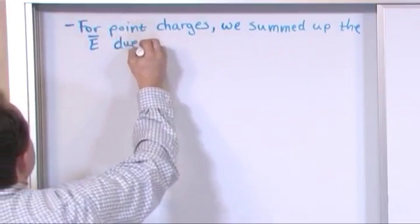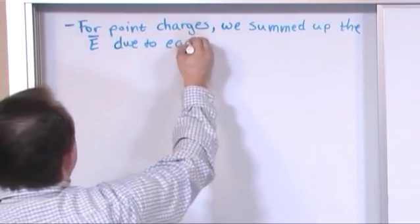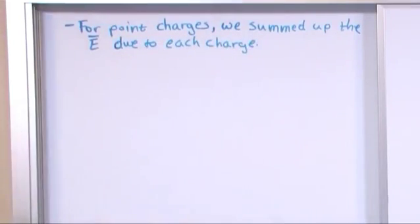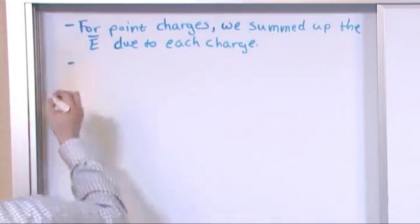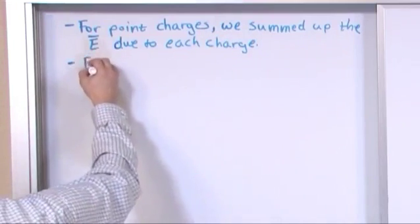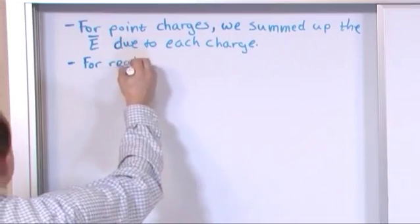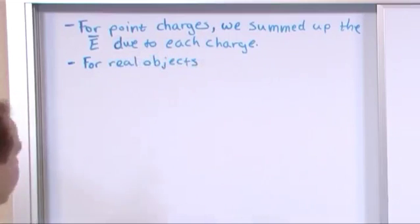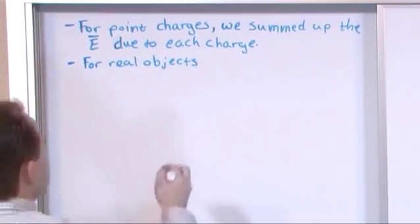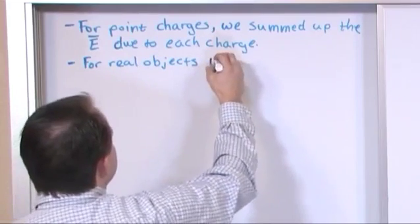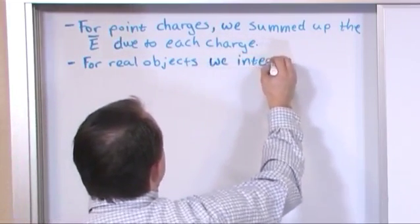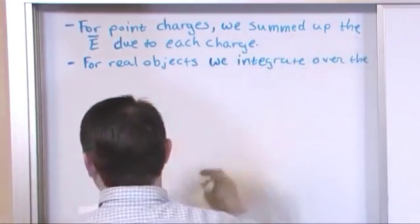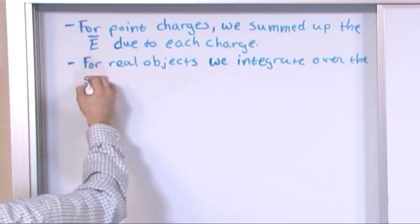So the electric field due to each charge, and that is how we actually calculated the resultant electric field. So what we're going to do here, I'm going to write it down in words: for real objects, and what I mean by this, by real objects, is you have millions of these little charges and you can't actually add them all up. So what we do is for real objects we integrate over, we integrate over the surface of the object to get the total electric field.